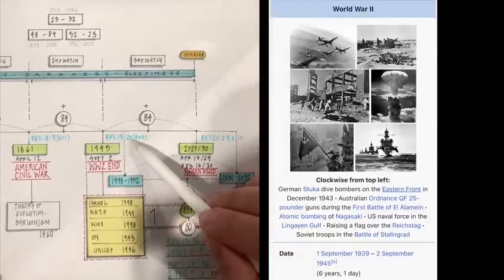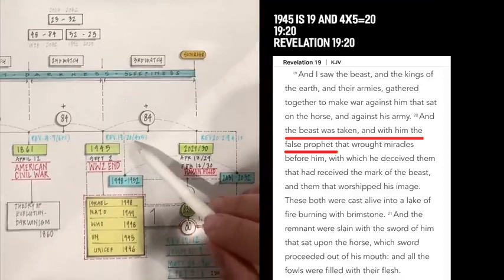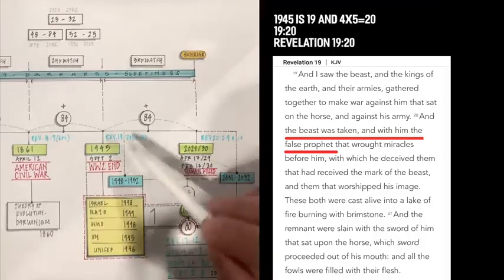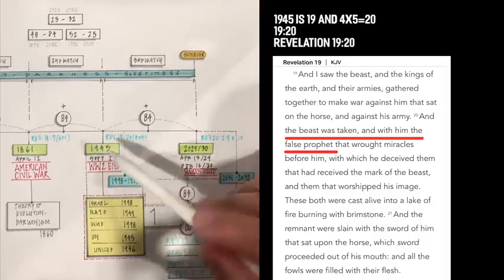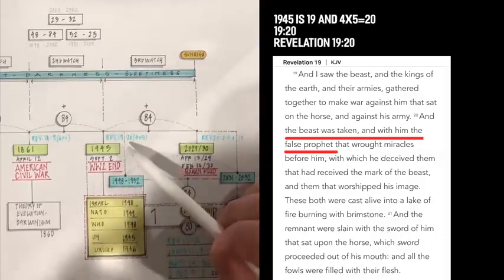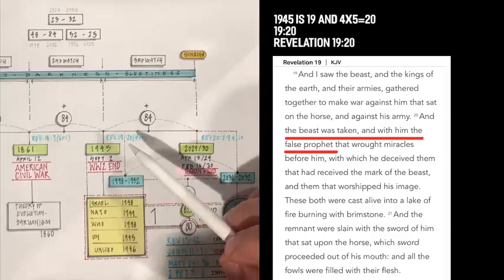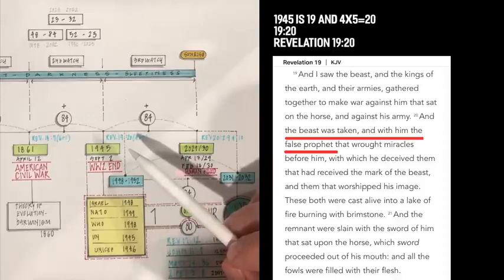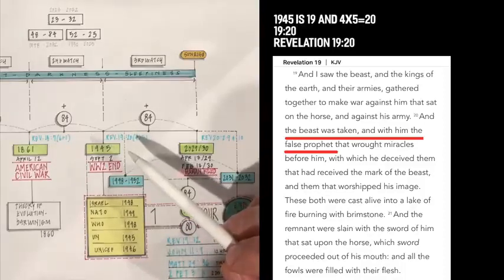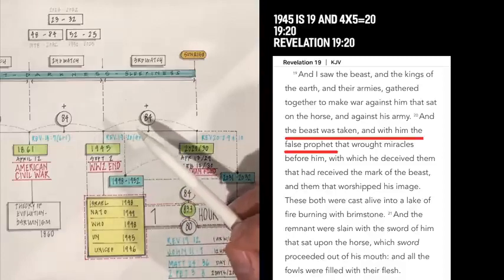And here we go. Revelation 19:20. What is that? It's 4 times 5, 19.45. What does Revelation 19:20 say? And the beast was taken, and with him the false prophet that wrought miracles before him, with which he deceived them that received the mark of the beast and then they worshipped his image. These both were cast alive into the lake of fire burning with brimstone.